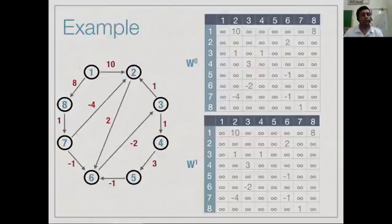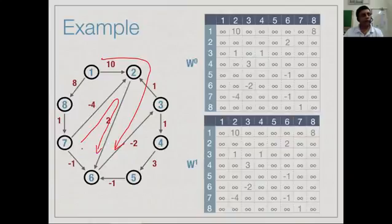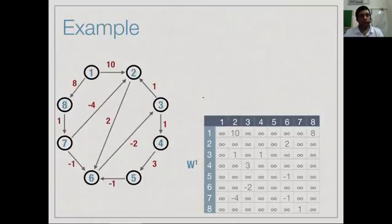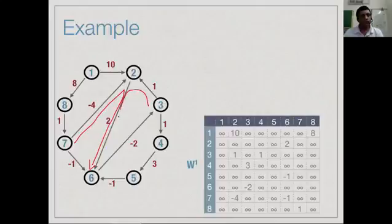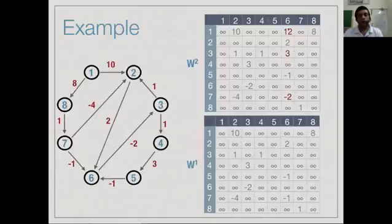Allowing vertex 2 enables new paths. For example, we can go 1→2→6, 3→2→6, and 7→2→6. These three entries get updated: 1→2→6 gives a new value of 12; 3→2→6 gives a new value of 3; and 7→2→6 gives -4 + 2 = -2. So w_2 differs from w_1 in these entries.